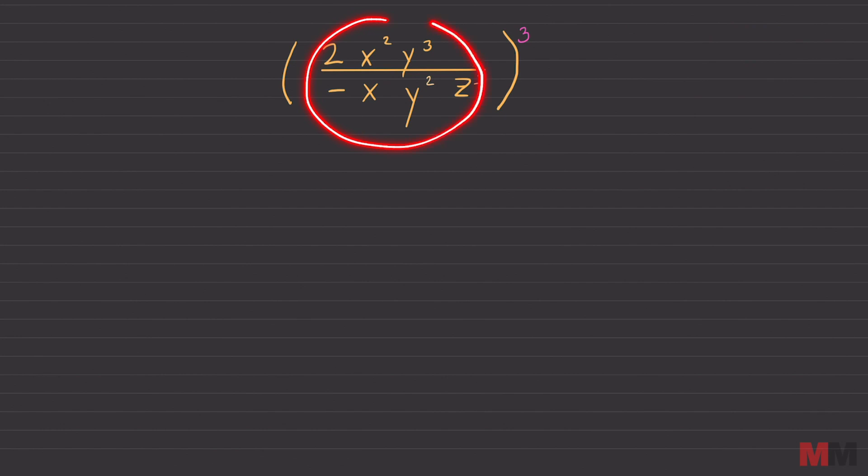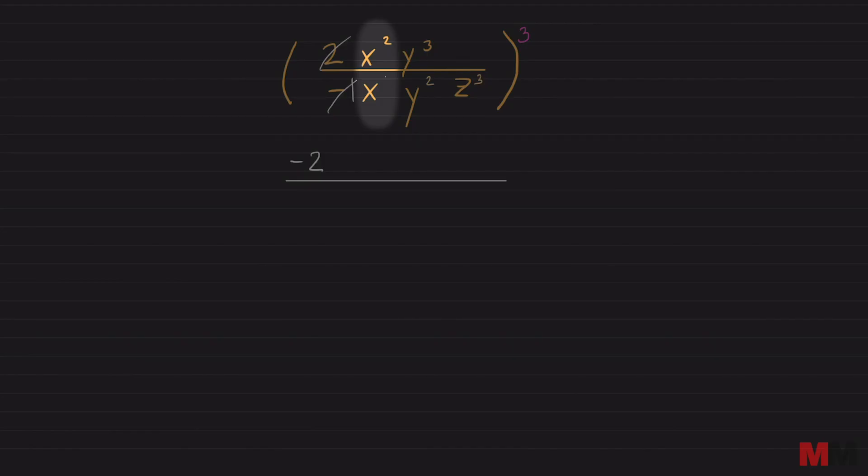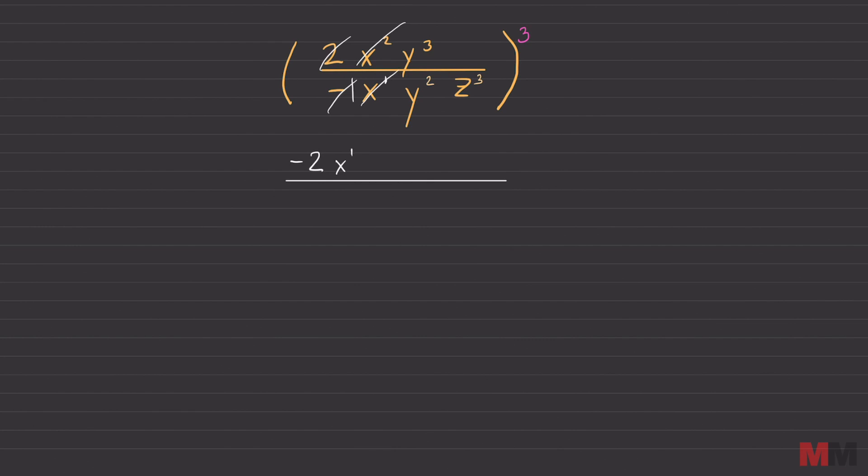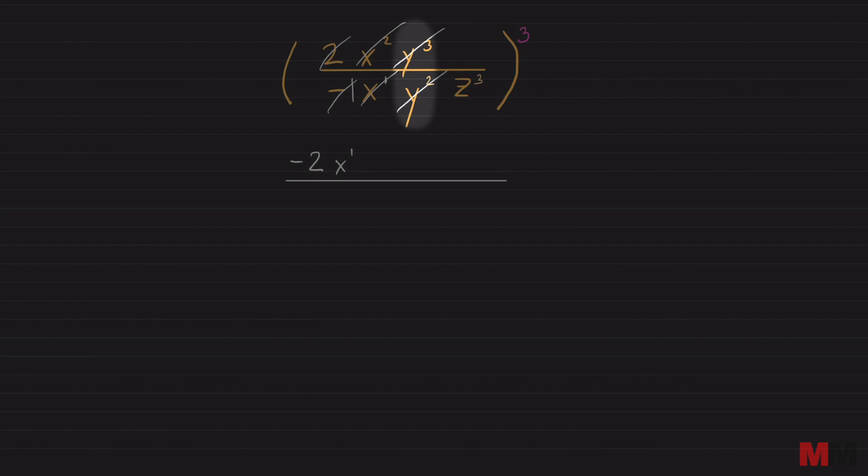You do what's inside the parentheses first. So we'll start with 2 and negative 1, the coefficients. That simplifies to negative 2. And we're going to write that result on the top. So that's over with. x2 and x. If this doesn't have an exponent, you slide in a 1. And all you're doing is subtracting from top to bottom. 2 minus 1 is 1. You don't have to put the 1 on the x. You can if you want to because we're going to do something with that afterwards. 3 and 2, that result is a 1 again. And z3, there's nothing to do with it. And it was at the bottom. So we're going to leave it at the bottom.